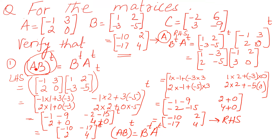One more time: there is a difference. This is A B whole transpose — first you multiply, then at the end you take the transpose. On the right hand side, you take the transpose first individually, then you multiply. Both should be equal. Left hand side equals right hand side. Whatever rows you have, convert rows into columns — that is called the transpose.